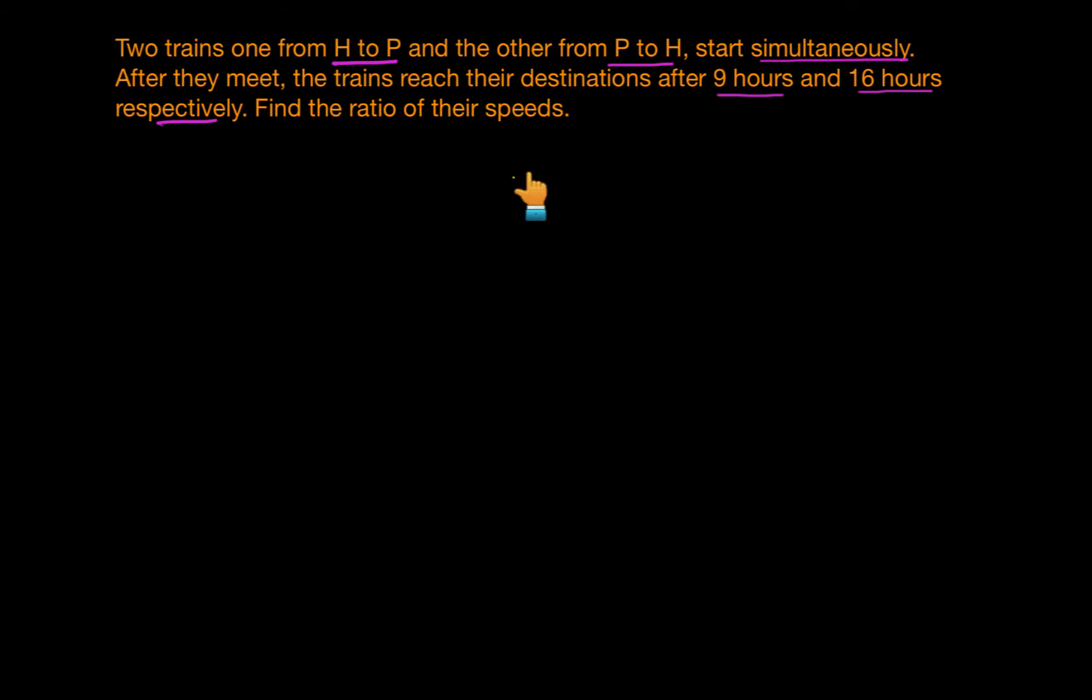Let us first of all draw a pictorial representation of what the question is trying to say. Let's say that this is my point H and this is my point P. So there are two trains starting from H and P and they start together at the same time. Let's say that the speed of the train starting from H is H km per hour and the speed of the train starting from point P is P km per hour.